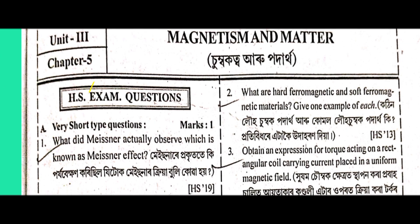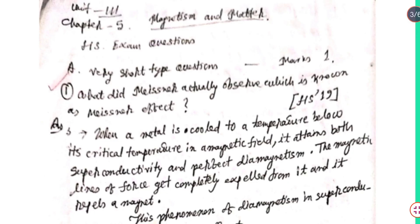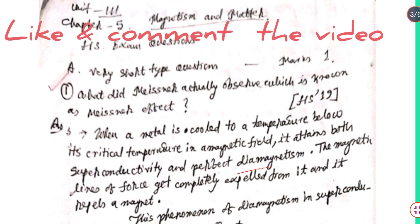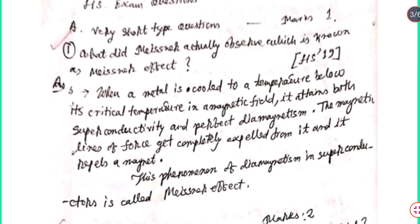What did Meissner actually observe, which is known as Meissner's effect? When a metal is cooled to a temperature below its critical temperature in a magnetic field, it attains both superconductivity and perfect diamagnetism. The magnetic lines of force get completely expelled from it and it repels a magnet. This phenomenon of diamagnetism in a superconductor is called Meissner's effect.